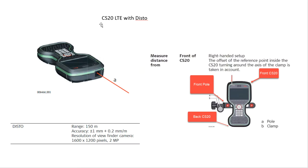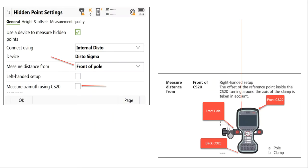You can use a CS20 LTE with the Disto — it has distance measurement up to 150 meters or 450 feet, accurate to a couple of millimeters. This is good for distance-distance, but you can also use it for bearing and distance. You can define where measurements are taken from — the front or back of the CS20. If measuring inside a building, put it against the wall and take a distance. If the bracket is on the other side of the pole, set it to the back of the pole. Under Function Settings in the hidden point, you can specify where your data collector is. I typically uncheck the azimuth option because of inaccuracy using the compass, and prefer either bearing distance or distance-distance.